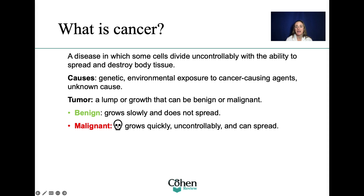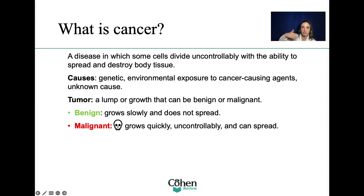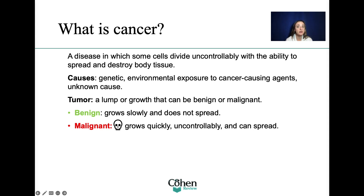Cancer has a tendency to grow uncontrollably and has the ability to spread to other parts of the body. What causes cancer? It could be genetic, meaning it gets carried over from generation to generation — grandparents to parents to children. It could also be environmental exposure to carcinogens or cancer-causing agents such as smoking cigarettes, asbestos, and even exposure to sunlight, such as with skin cancer. And sometimes it's idiopathic, meaning we don't know why it happens.